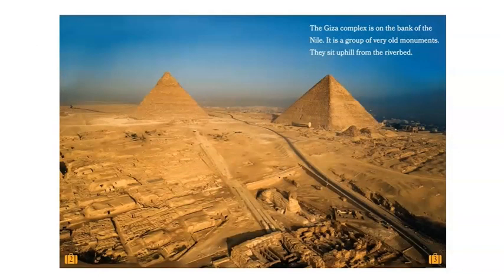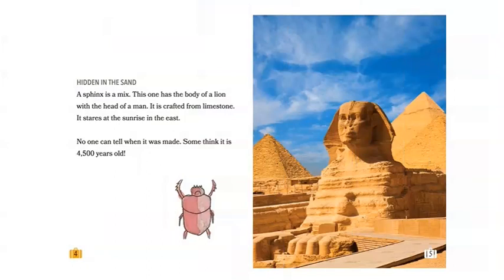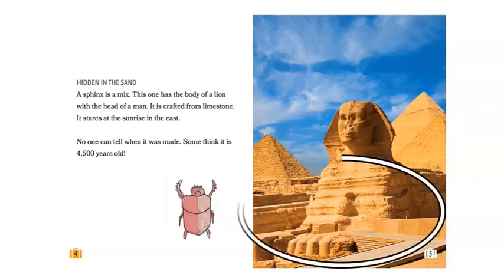The Giza complex is on the bank of the Nile. It is a group of very old monuments. They sit uphill from the river bend. Hidden in the sand, a Sphinx is a mix. This one has the body of a lion with the head of a man. It is crafted from limestone. It stares at the sunrise in the east. No one can tell when it was made. Some think it is four thousand five hundred years old.